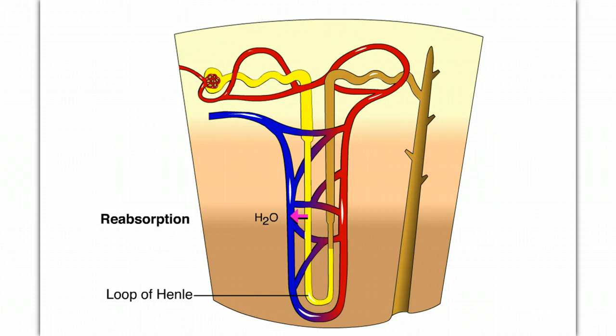In the ascending loop, the surrounding fluid becomes more dilute. This portion of the loop is impermeable to water but not sodium chloride. Sodium chloride diffuses out, lowering the solute concentration of the filtrate and adding to the solute concentration of the surrounding fluid. Near the top of the loop, sodium chloride is actively transported out, further diluting the filtrate.